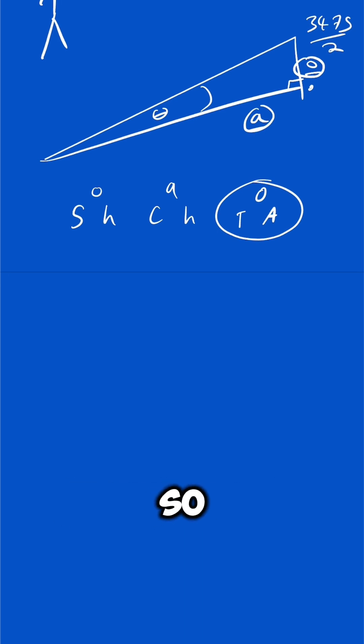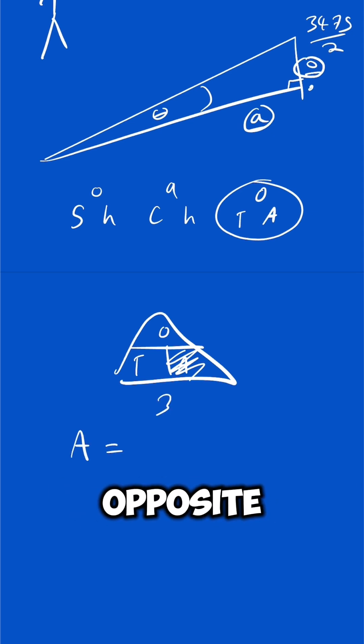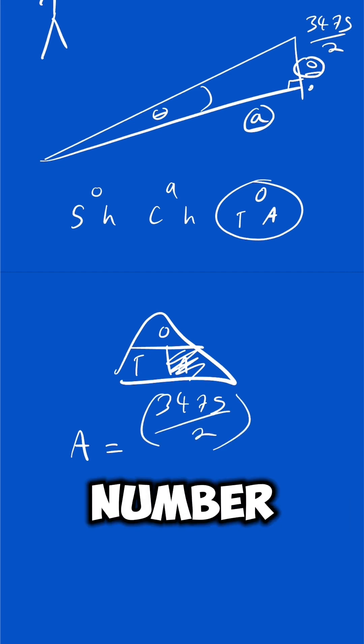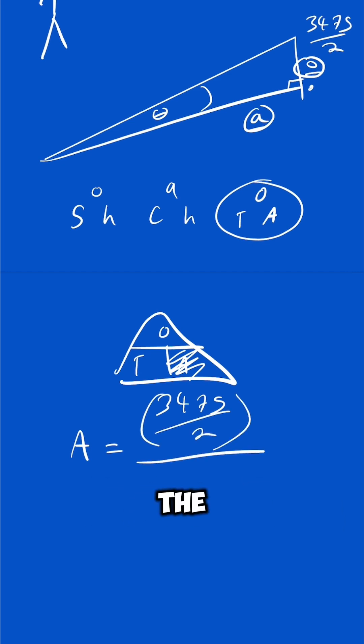So we have our triangle and we cover up what we're interested in, which is A. Therefore A equals the opposite, 3475 over 2, that's just a number, over the tan of the angle which is 0.259.